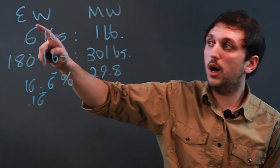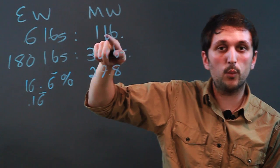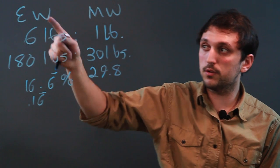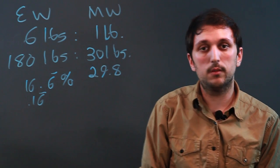So just to reiterate, earth weight is six pounds for every one pound of moon weight. You're much lighter on the moon. So a hundred eighty pound person on earth is thirty pounds on the moon.